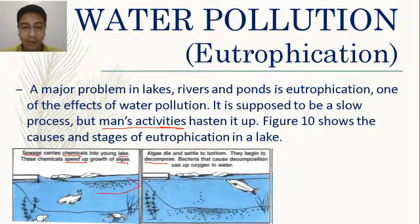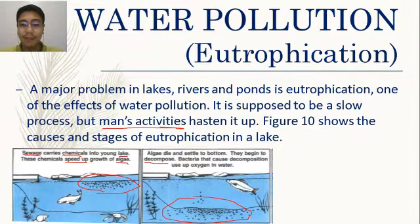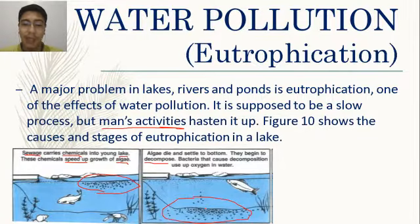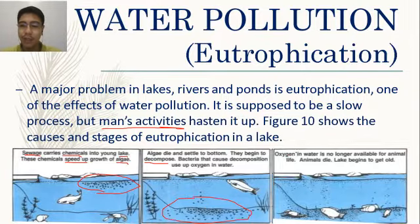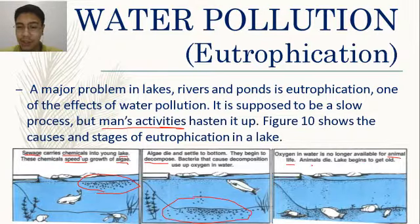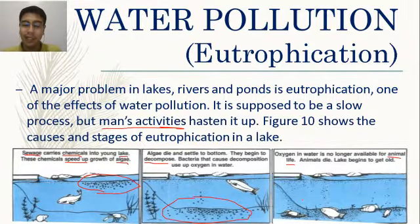Bacteria that cause decomposition use up the oxygen in the water. The bacteria compete with organisms like fish for oxygen. When oxygen in the water is no longer available for animal life like fish, the animals die and the lake begins to age.